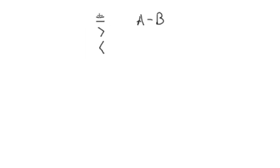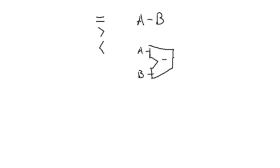Let's reason through this, starting with equality, because the equals case is actually fairly easy. The result of any digital subtractor circuit is going to be A minus B. So if A is 8 and B is 5, the output is going to be 3. But what happens if A equals 9 and B equals 9?